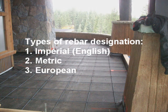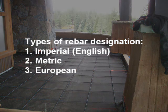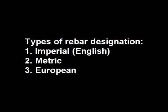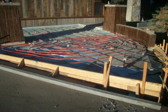The first one we're going to go over is the Imperial or English system. In the United States, we determine the size of the rebar by using simple numbers — for example, you can call it a number four bar, number six bar, or number eight bar.